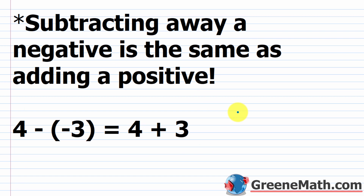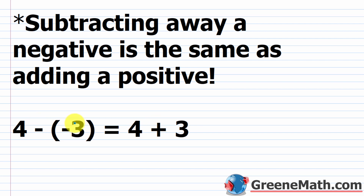Now let's talk about something that gives students a lot of trouble: subtracting away a negative is the same as adding a positive. You might see something like 4 minus a negative 3, and that equals 4 plus 3. Just use the same procedure: the minuend 4 stays the same; subtraction becomes addition; the subtrahend negative 3 becomes its opposite, positive 3. So 4 minus negative 3 becomes 4 plus 3, which equals 7.